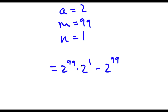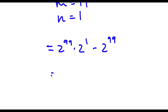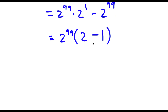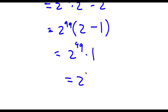Now I factor out 2 to the power of 99. That gives 2 to the power of 99 times 2 minus 1. And 2 minus 1 equals 1, so I have 2 to the power of 99 times 1, which equals 2 to the power of 99. So that's my answer.